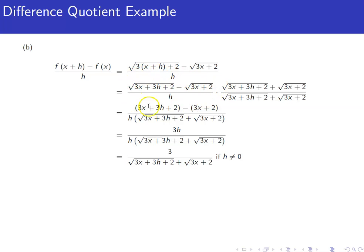Doesn't look like there's a lot we can do with this, but if we remember some of our rationalizing denominator ideas, in this case we can rationalize the numerator and multiply by the conjugate. Remember the conjugate is flip the sign in the middle. So we're going to multiply top and bottom by the conjugate.